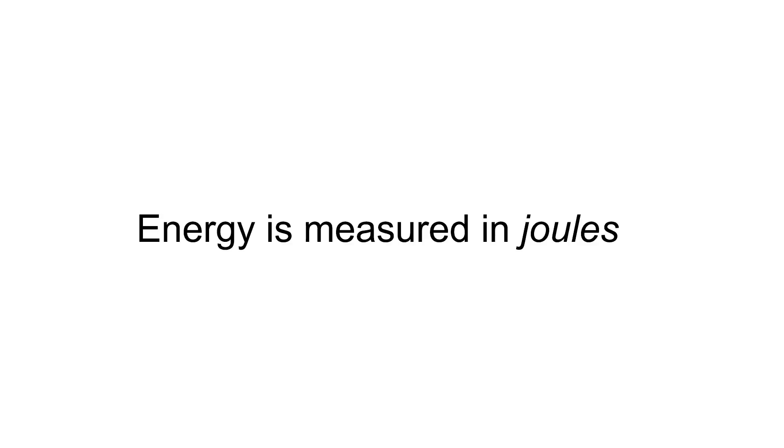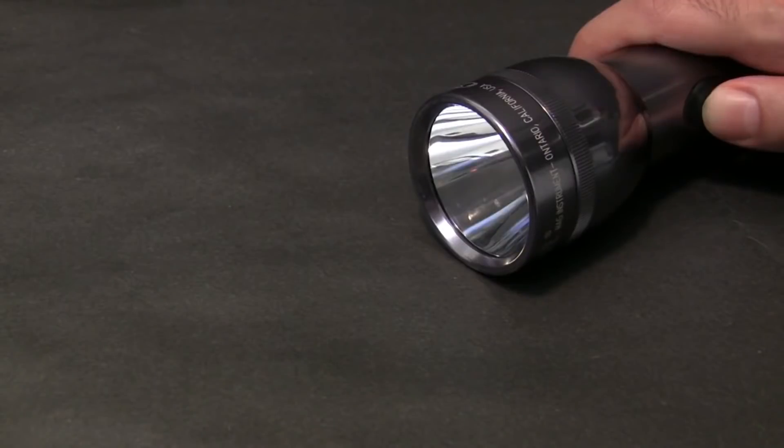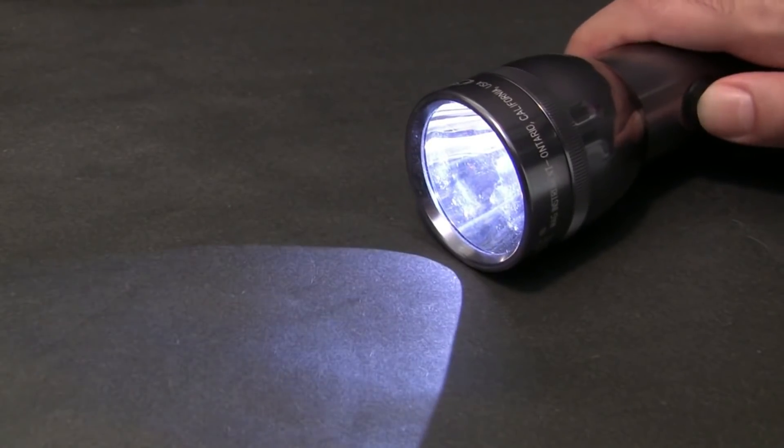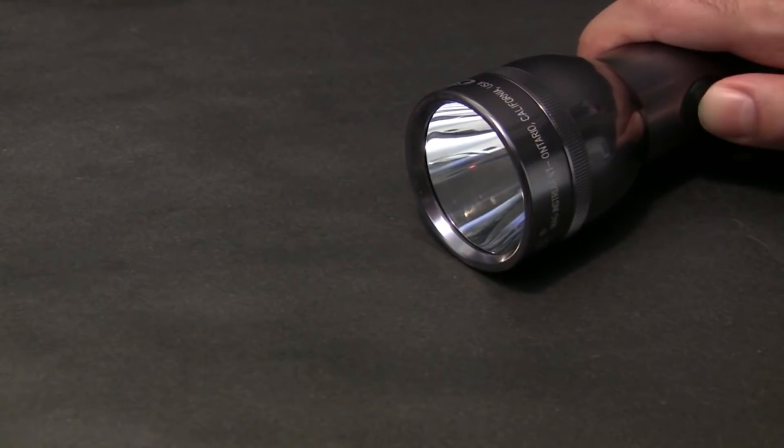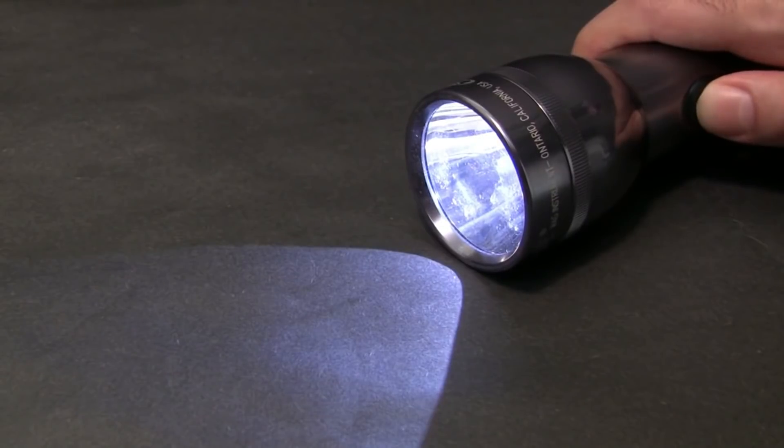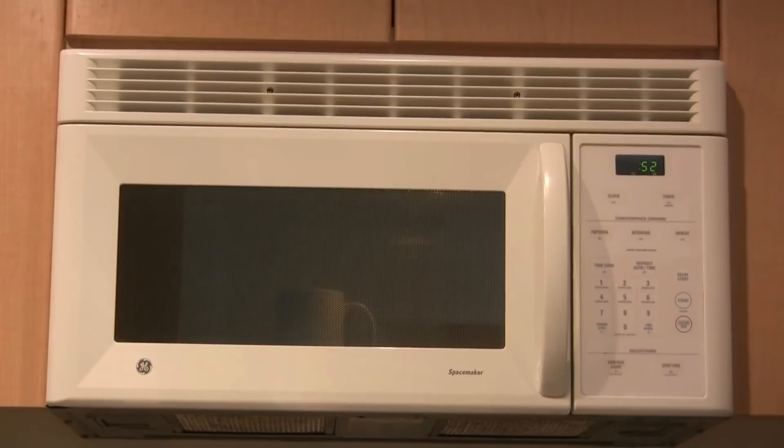It's important to know that we measure energy with units called joules. Joules can be used to describe the amount of energy it takes to do a lot of different things. 1 joule is enough energy to power this flashlight for 1 second. 3 joules is enough energy to power this flashlight for 3 seconds. And 90,000 joules is the energy required to power this microwave for 1 minute to make a cup of tea. We'll talk more about energy and joules later in the video.